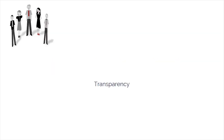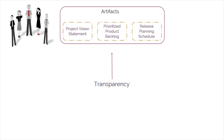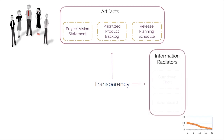In Scrum, transparency is provided by openly sharing the Project Vision Statement, which can be viewed by all stakeholders and the Scrum team. The Prioritized Product Backlog with user stories can be viewed by everyone both inside and outside the team. The Release Planning Schedule, which may be coordinated across multiple Scrum teams. And Information Radiators, such as the Scrum Board and Burndown Charts, which make a team's progress clearly visible to all.